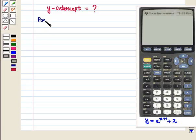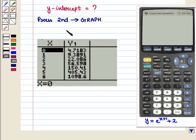So we first press second key followed by graph key. We get the following table of values for this function.